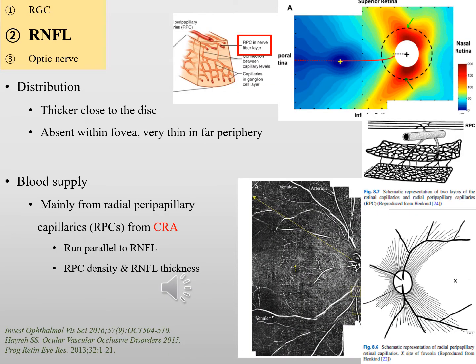Next, the retinal nerve fiber layer structure becomes thicker closer to the disc margin and is absent within the fovea. It is supplied by specially characterized capillaries called radial peripapillary capillaries, which originate from the central retinal artery. Radial peripapillary capillaries run parallel to the retinal nerve fiber layer, and their density has a significant correlation with retinal nerve fiber layer thickness.